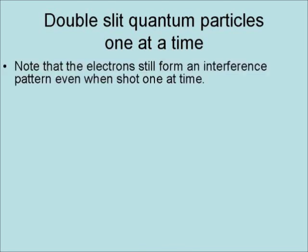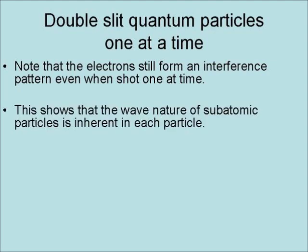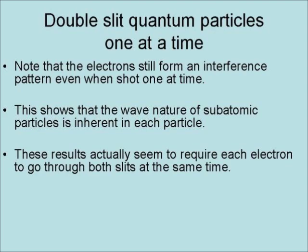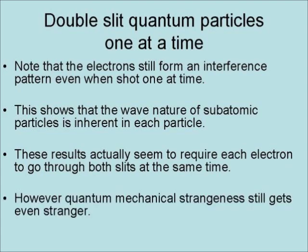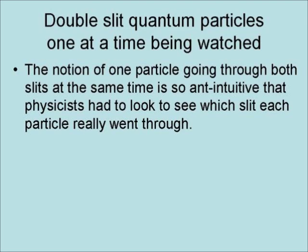Note that the electrons still form an interference pattern even when shot one at a time. This shows that the wave nature of subatomic particles is inherent in each particle. These results actually seem to require each electron to go through both slits at the same time. However, quantum mechanical strangeness still gets even stranger. The notion of one particle going through both slits at the same time is so anti-intuitive that physicists had to look to see which slit each particle is actually going through.